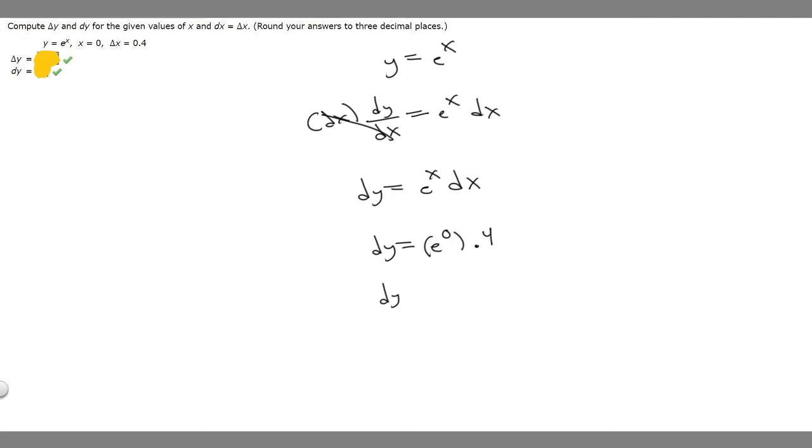We know dy equals e to the 0, which is just 1, times 0.4, which is just going to be equal to 0.4. So dy is going to be equal to 0.4.